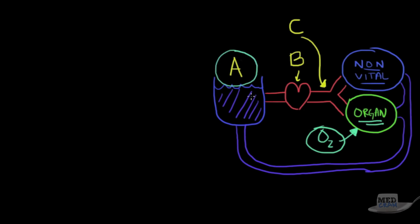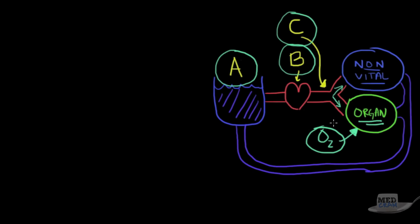There are three places where oxygen delivery can break down. A: not enough blood — hypovolemic shock. B: the heart is not strong enough to pump blood — cardiogenic shock. C: dysregulation of how blood is distributed to vital versus non-vital organs — septic or distributive shock — where blood is misdirected away from vital organs.